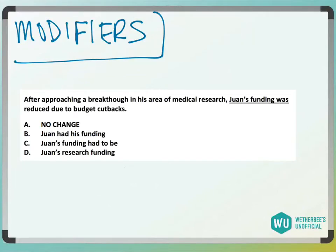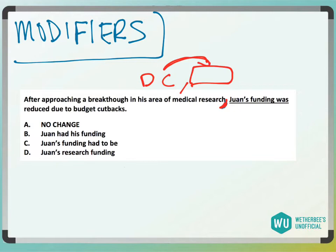With modifiers, when you have a dependent clause at the beginning — for example, 'after approaching a breakthrough in his area of medical research' — what comes after this dependent clause needs to be in reference to one another. The subject of the main clause must match who performed the action in the dependent clause.